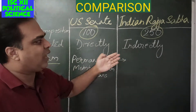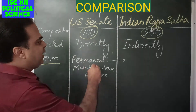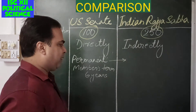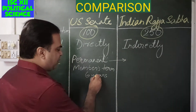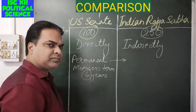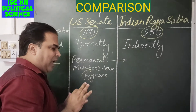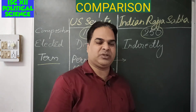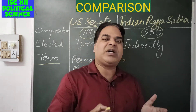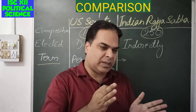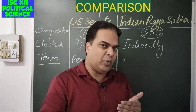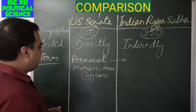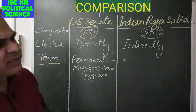Regarding term: both the US Senate and the Indian Rajya Sabha are permanent houses — they are never dissolved. Members of both houses serve a term of six years. Every second year, one-third of the members retire and new members come in. This makes them quasi-permanent houses — old members go out and new ones come in continuously.